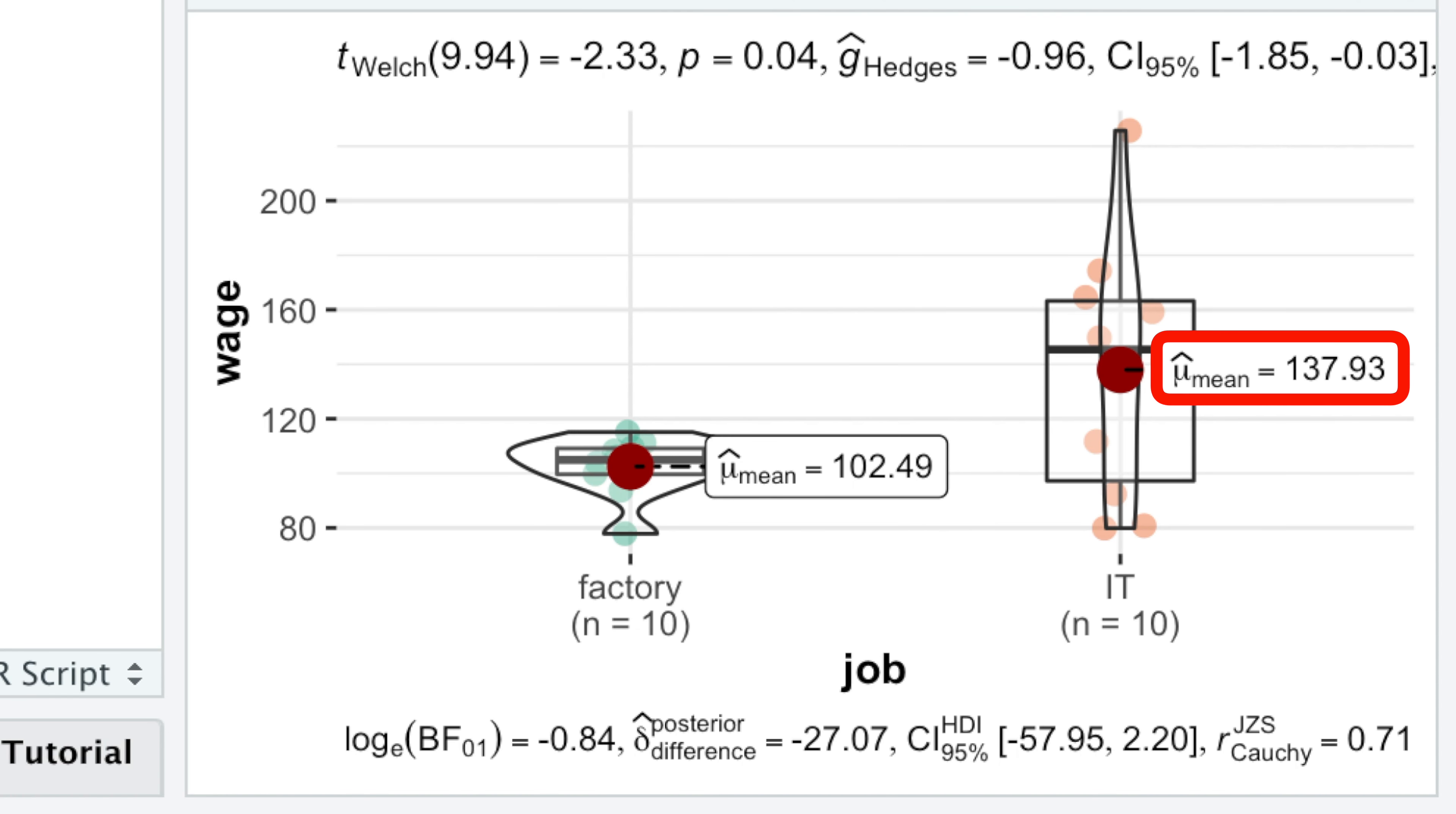Particularly, IT crowd gets $35,000 on average more than factory workers.